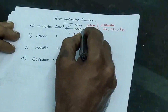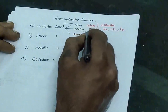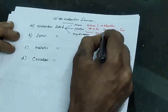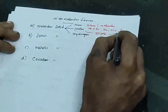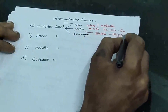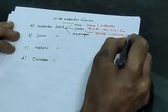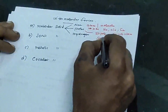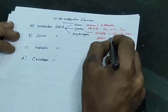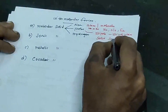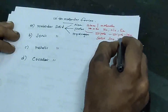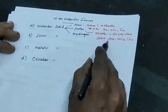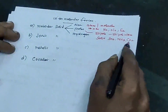In polar molecular solids, the force of attraction is dipole-dipole interaction. Examples are the solid forms of sulfur dioxide, ammonia, and carbon dioxide.